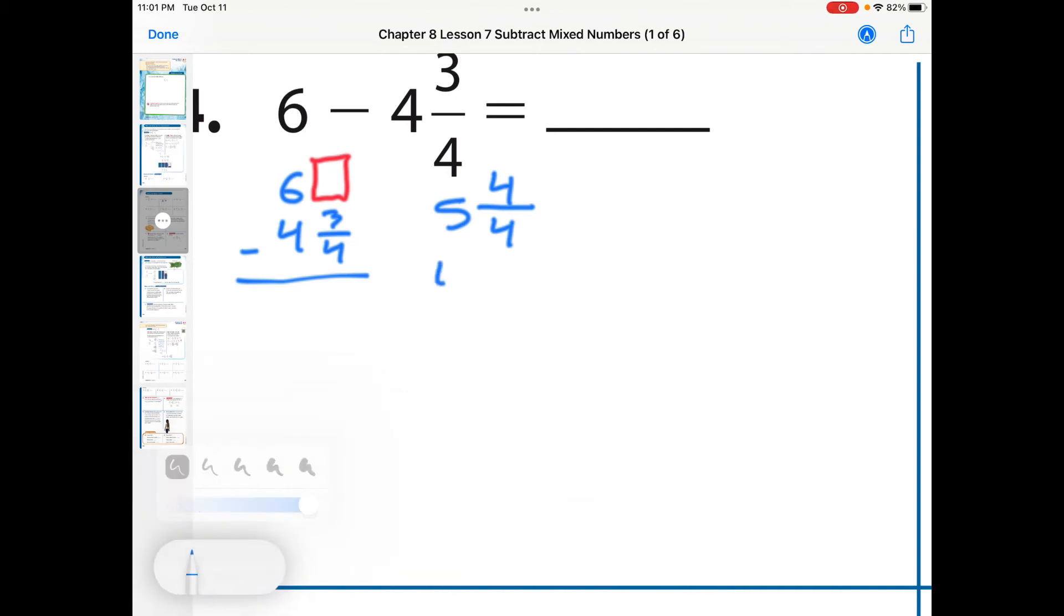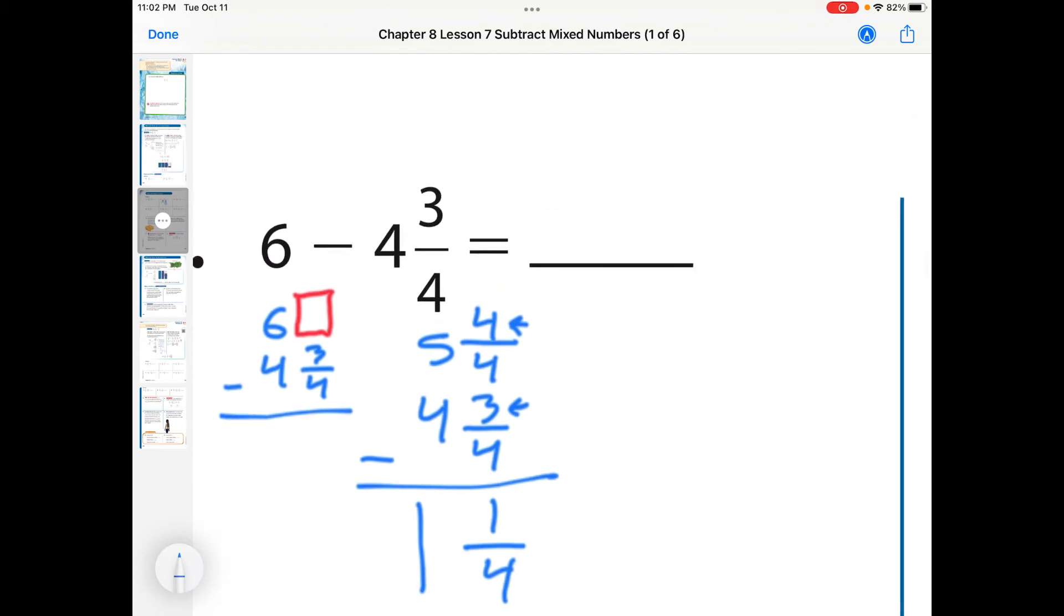And so we have that. Now let's set ourselves up for success here. We're going to bring our 4 and 3 quarters over. And this should work out pretty well. Let's start with our fractions first. 4 here minus 3 here is going to give us 1. And we're going to keep our same denominator. And then 5 minus 4 is 1. And so the answer to this is going to be 1 and a quarter. Or 1 and 1 fourth.